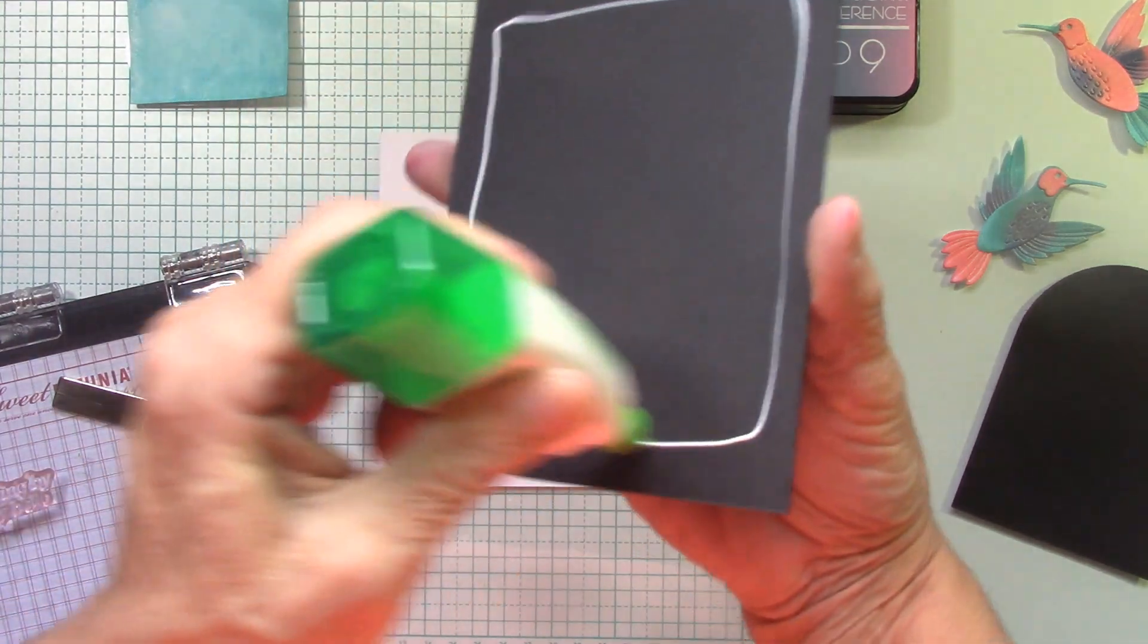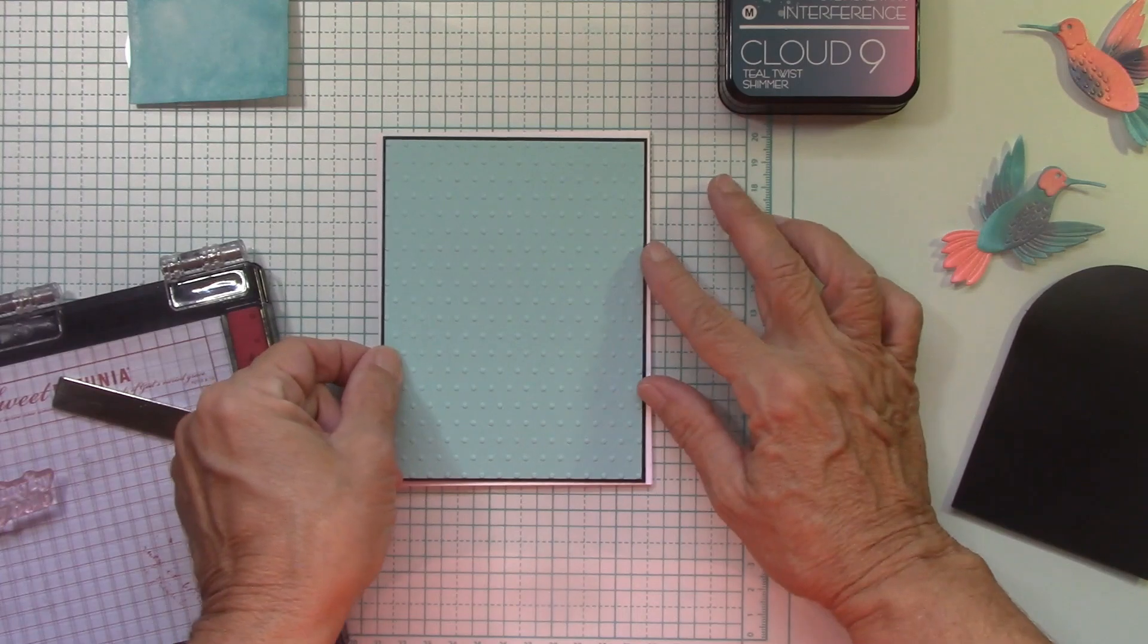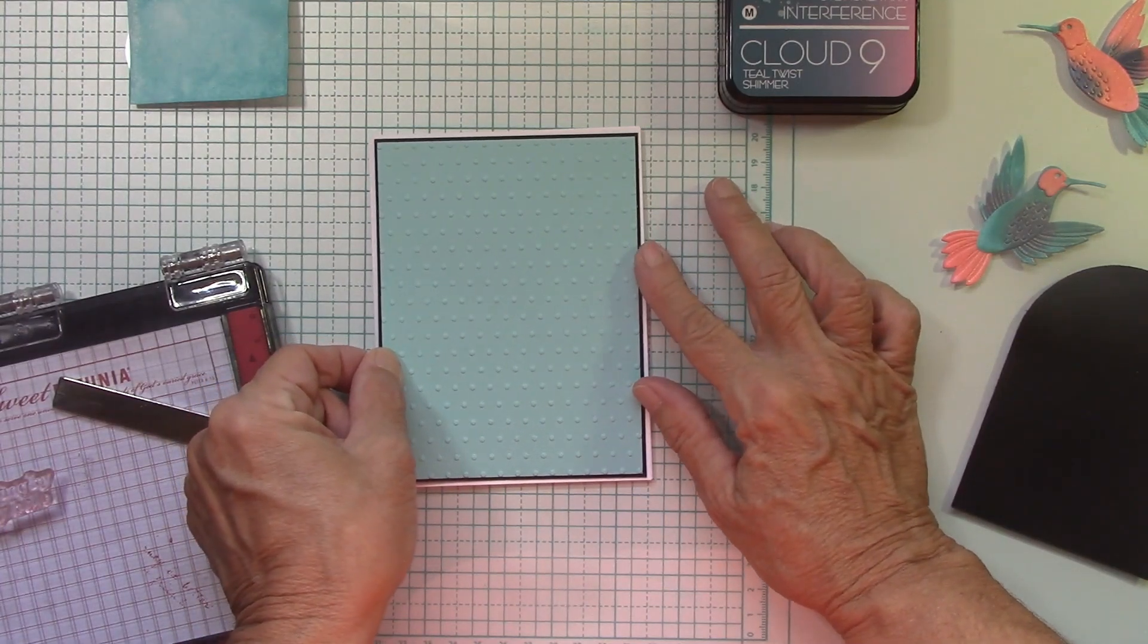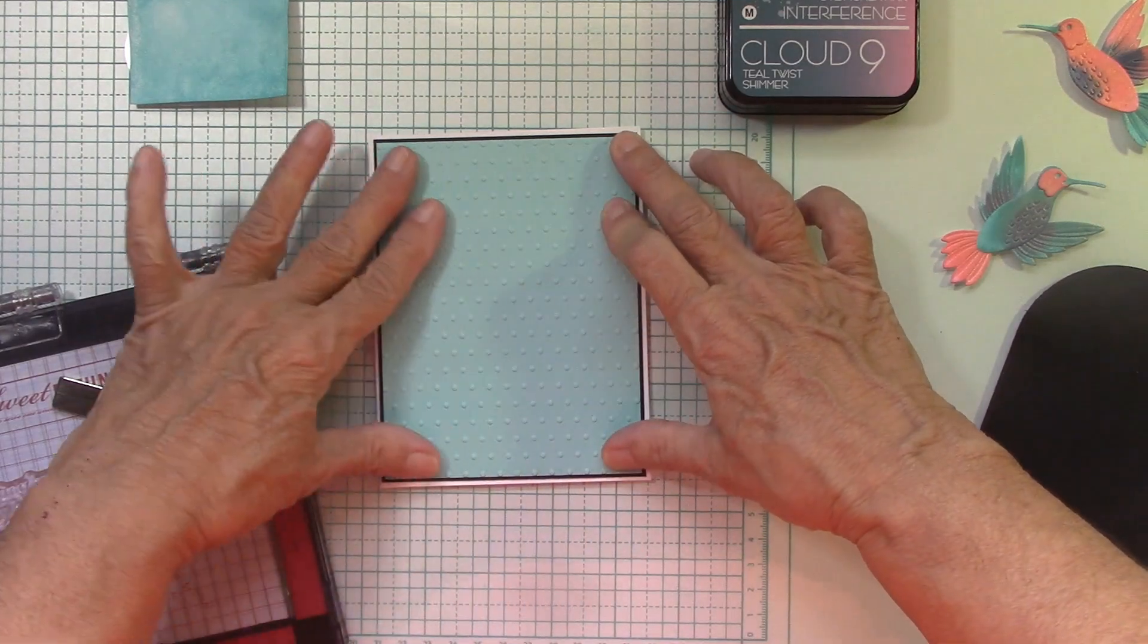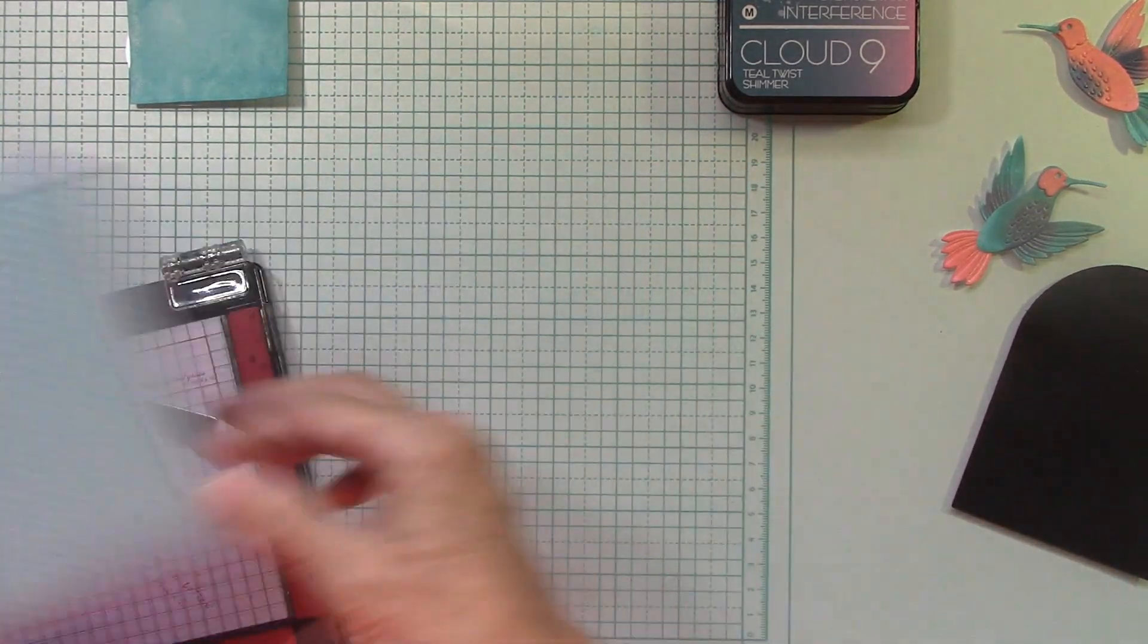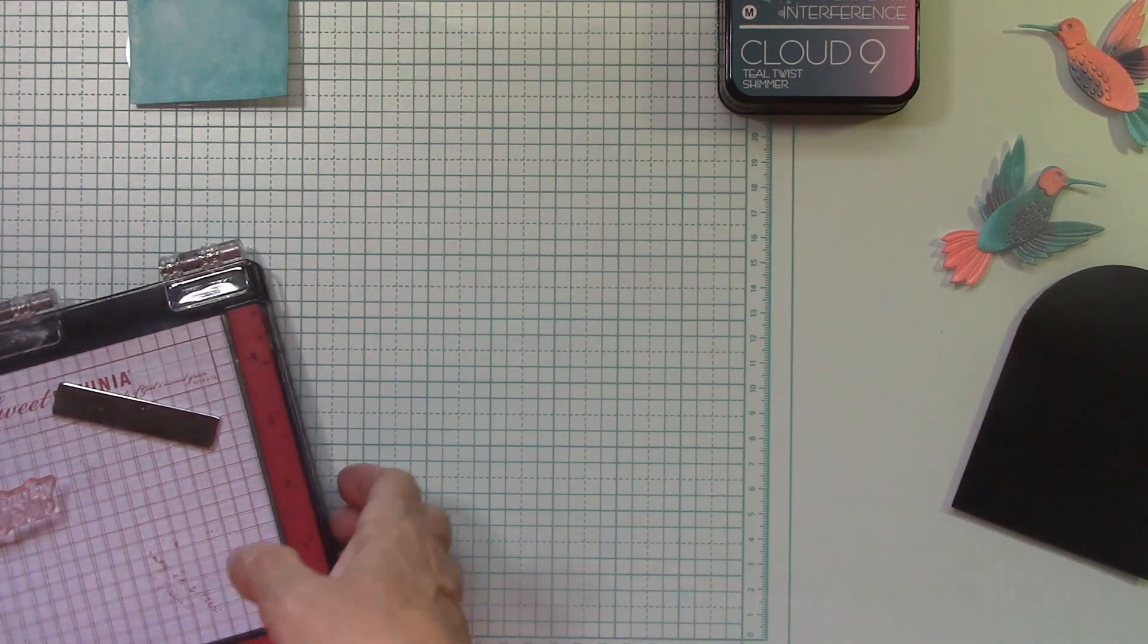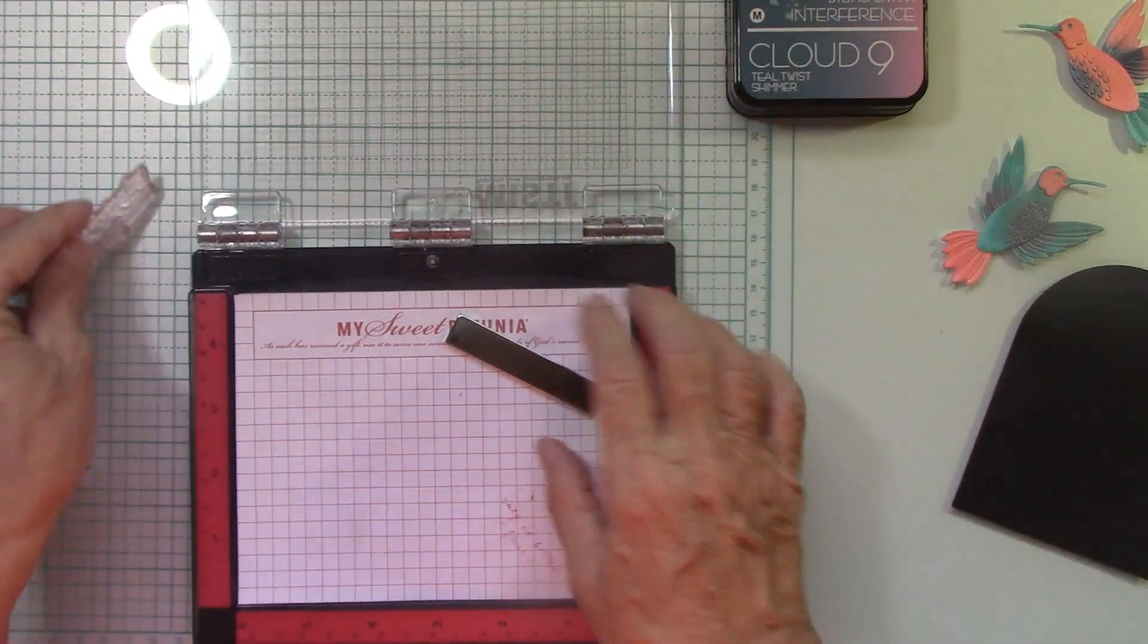Let's go ahead and attach that to our card base. And now we'll also have a white border. So it's white, black, and then the sea glass. Very nice. Okay. Let's do a little stamping, our sentiment. I'm going to bring in my mini MISTI. I love this little device. It just fits perfectly.